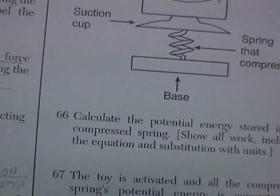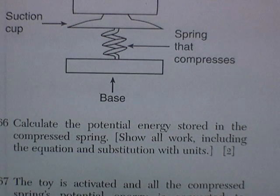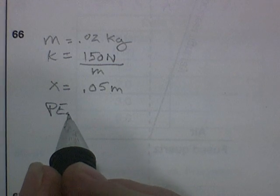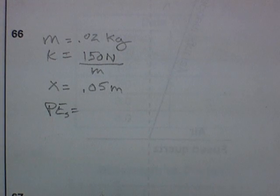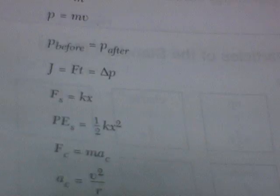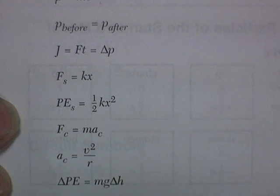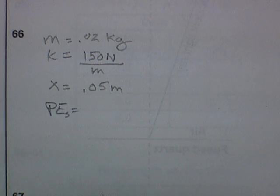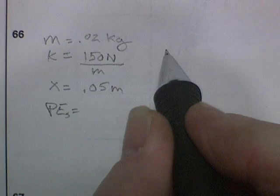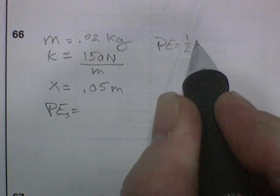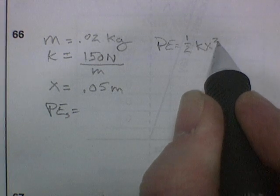And question 66 is asking us to calculate the potential energy stored in that spring. So we want potential energy in a spring. So we go to the formula sheets. We've got potential energy in the spring. And it's right here. Potential energy of the spring is 1 half Kx squared. Well, the potential energy in the spring, so we write our equation. Potential energy is equal to 1 half K times X squared.